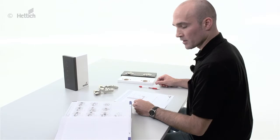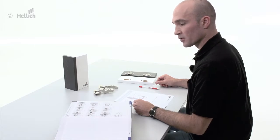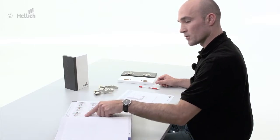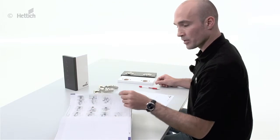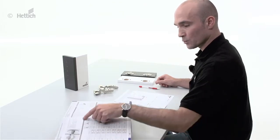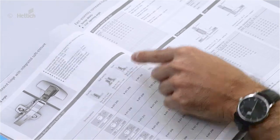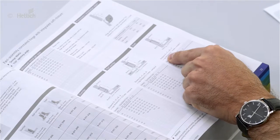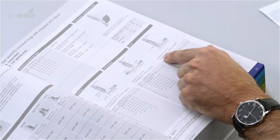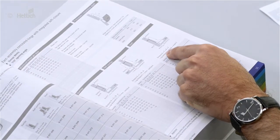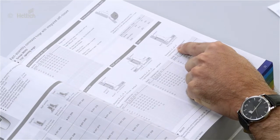In this step we want to demonstrate how to calculate a standard inset application. Therefore we go to the catalog page and we see here the inset application and on the opposite side the formula to calculate the mounting plate distance D which is C plus B plus F.